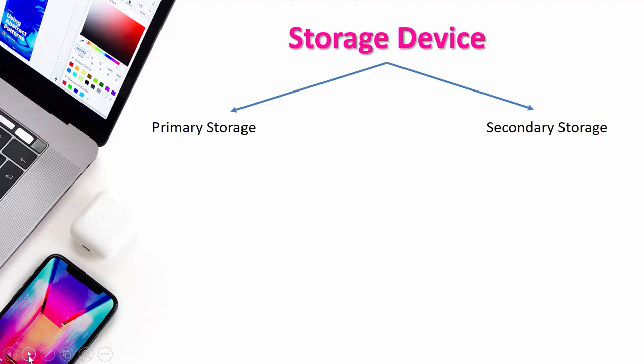There are two types of storage devices: primary storage and secondary storage. Primary storage is where data is stored temporarily — when the computer is turned off and on again, whatever was stored in primary storage gets erased and we cannot retrieve that data. But if we store in secondary storage, like a hard disk or pen drive, we can retrieve that data even after switching the computer off and on again.